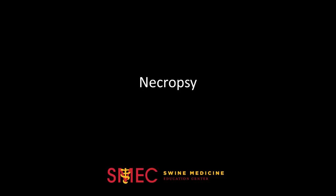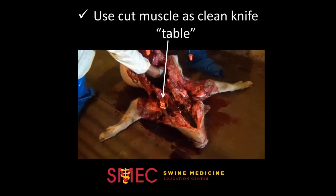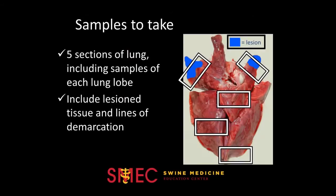After selecting and euthanizing the pig, begin the necropsy. Keep your knife clean by using the cut muscle as a table, as shown here. Also remember not to cut the stomach or intestines until last, so as not to contaminate your knife. Take samples of both lesion tissue and regular tissues, making sure to include the line of demarcation if possible.